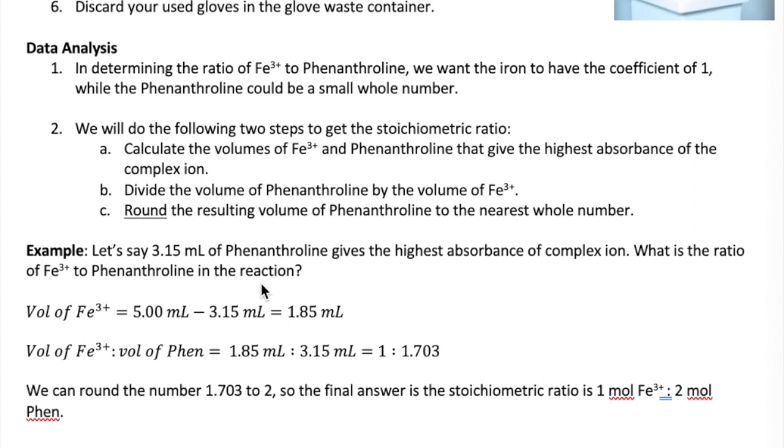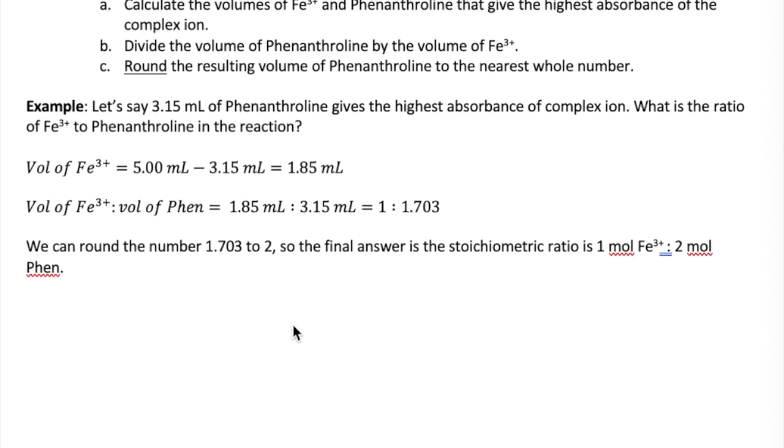Let's say you find from your plot that 3.15 mL of Phenanthroline gives the most product. Since the total volume is 5, that means 1.85 mL of iron is needed in the reaction. If you reduce this ratio to a small whole number, what you'll get is 1 to 1.703. Now, instead of trying to find a multiplier that would convert 1.7 to a whole number, all you have to do is just round 1.7 to the nearest whole number, which is 2. This is because the uncertainty in this experiment doesn't justify highly precise calculations to be used in finding the coefficient.